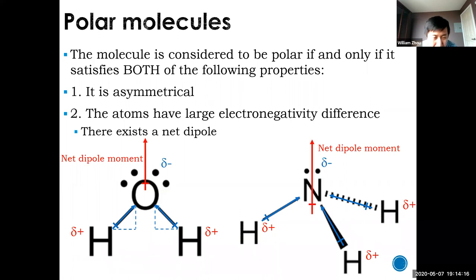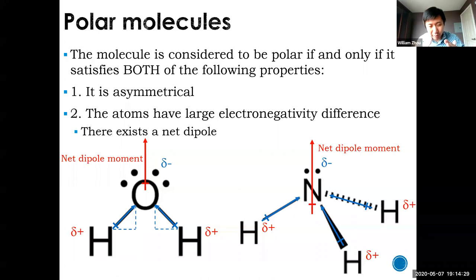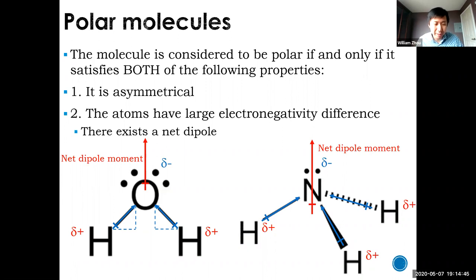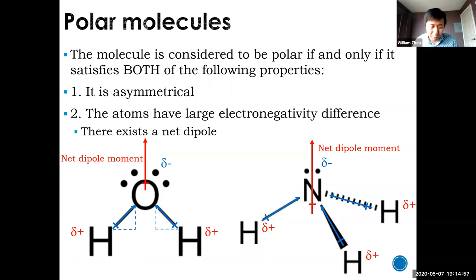Look at water: oxygen has delta-negative because it's much more electronegative than hydrogen, and hydrogen has delta-positive. Drawing the two dipoles, they both point from hydrogen toward oxygen, forming a little triangle. Using vector addition, their horizontal components cancel, but their vertical components add up — so the net dipole points upward. The oxygen side is more negative than the hydrogen side, so water is polar.